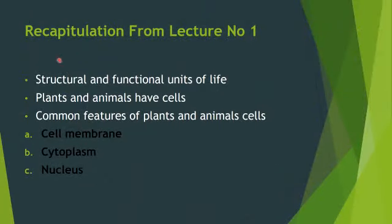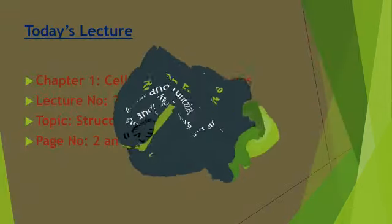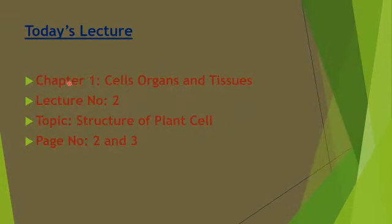In the previous lecture we studied about cells — the structural and functional units of life. Both plants and animals have cells, and the common features of plant and animal cells are cell membrane, cytoplasm, and nucleus. Today we are starting Chapter 1: Cell, Tissues and Organs, and the topic is Structure of Plant Cells.